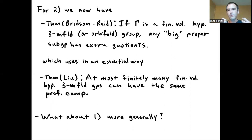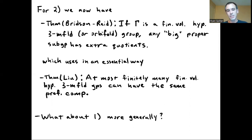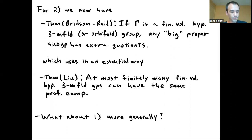In very broad terms, if you want to prove a group is profinitely rigid — at least for a finite volume hyperbolic 3-manifold group — part two is done. All the work needed there has been done. So what about the first part: detecting that representation? What can we say about detecting representations of these groups more generally, not just with the very restrictive hypotheses necessary for those two specific groups?